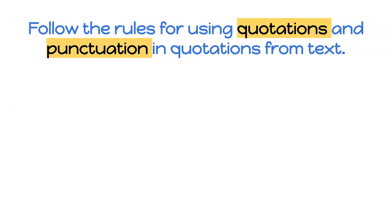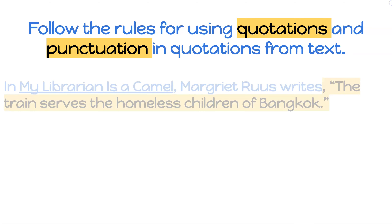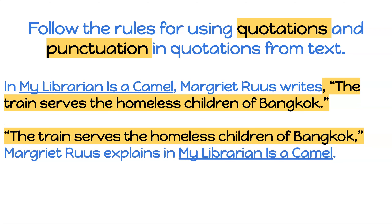Another thing to remember is that we follow all the rules that we learned yesterday for using quotations and punctuations — for quoting text, same stuff. In the example, In My Librarian is a Camel, Margaret Roos writes, 'The train serves the homeless children of Bangkok,' we notice a comma separating the source from the actual text written. We have quotation marks around the text we read, a capital letter to begin, and a period or punctuation mark inside the quotation marks. Similarly, if we started off with a direct quote, the comma separating the text from the source goes inside the quotation marks.